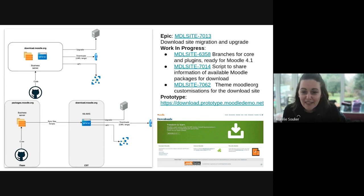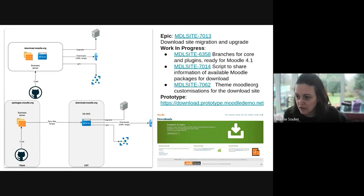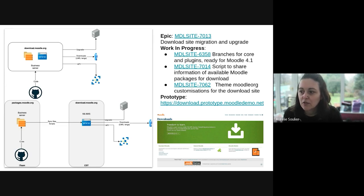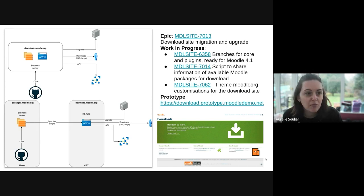This next part I'm going to read because this is Victor's speciality, not mine. Basically, this is what's been done so far on the server migration from the download site — the epic number is on the slide if you're interested. In the diagram at the top showing the current status, the code packaging and Moodle instance are on the same server as the file storage. It's a Moodle 3.5 and can't be upgraded because it's an old server — it's the only site not hosted in a Kubernetes infrastructure.